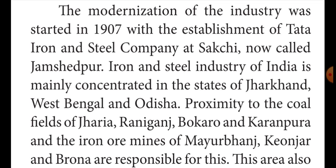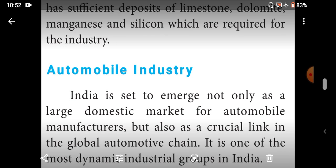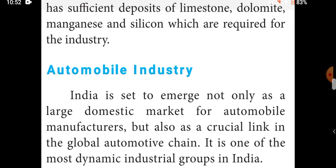Some of the coal fields used in steel production are Jharia, Raniganj, Bokaro, and Karanpura. These are the iron ore mines where we find limestone, dolomite, manganese, silicon, etc. With the help of these materials, they produce metals, equipment, and machines from iron and steel.